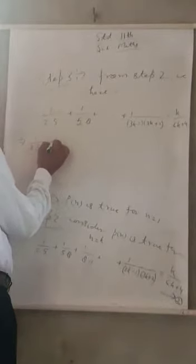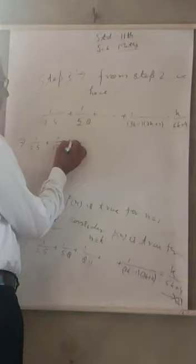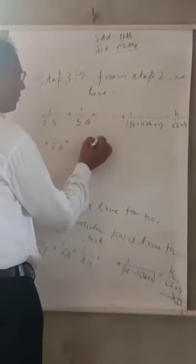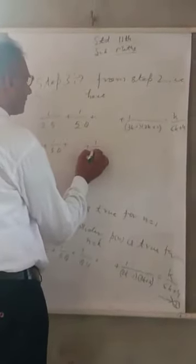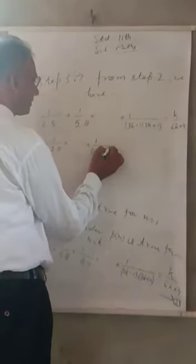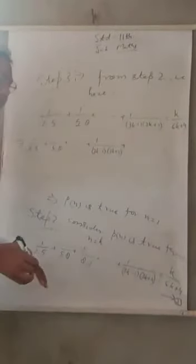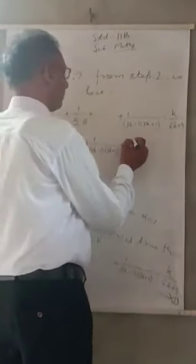1/(2·5) + 1/(5·8) + ... + 1/((3k-1)(3k+2)). Now for the next term when k becomes k+1.